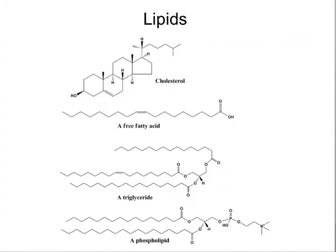Lipids can come in a diversity of forms, not just triglycerides. They can have free fatty acids with just a single chain. You can also have structures such as cholesterol, which is what we call a steroid — a very different structure from a triglyceride or a phospholipid.